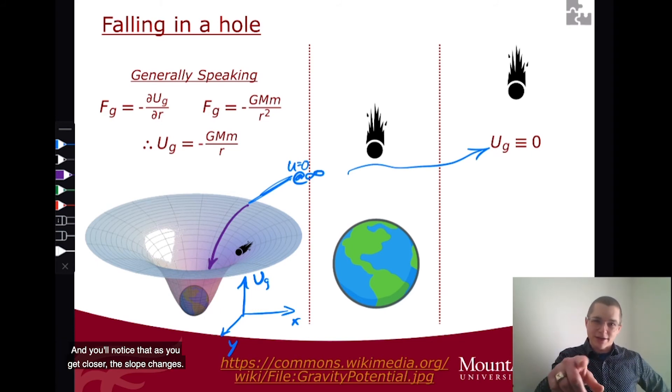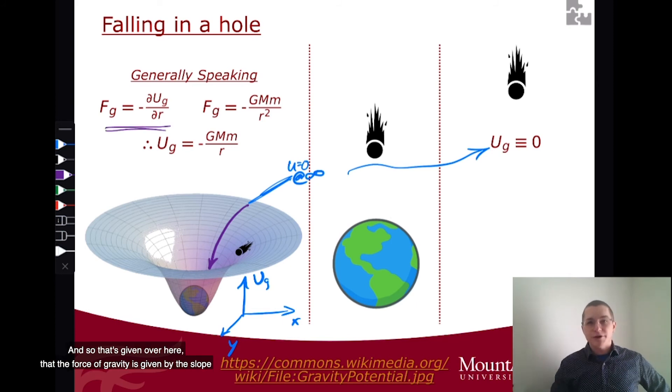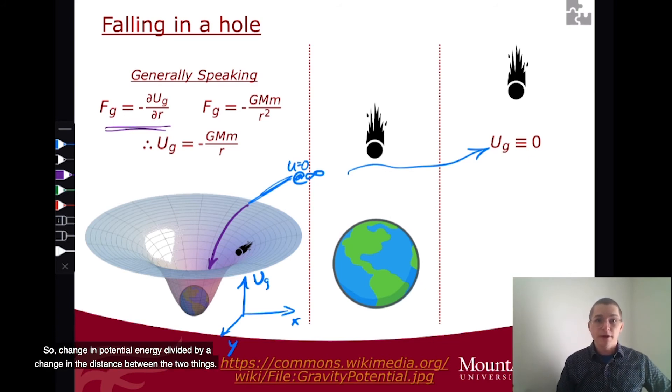And you'll notice that as you get closer, the slope changes. And so that's given over here that the force of gravity is given by the slope of your potential as you change your position. So the change in potential energy divided by a change in the distance between the two things.